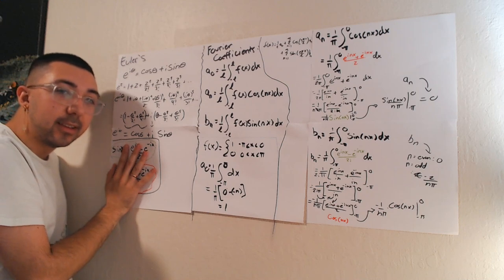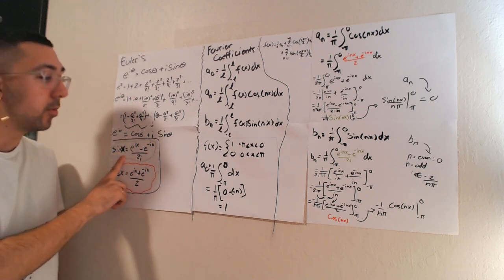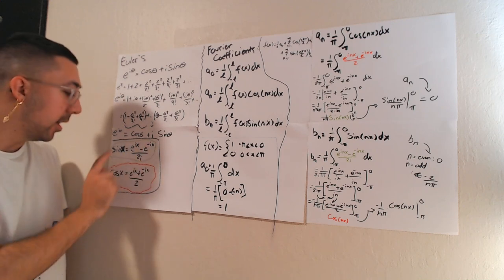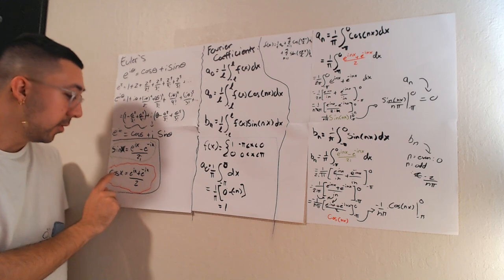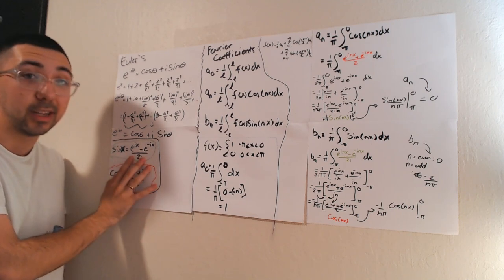Euler also has these things that we can get from his formula. Sine of x is equal to e to the ix minus e to the minus ix. We're going to need cosine x, which is e to the ix plus e to the minus ix all over 2, and these are the complex definitions for sine and cosine.